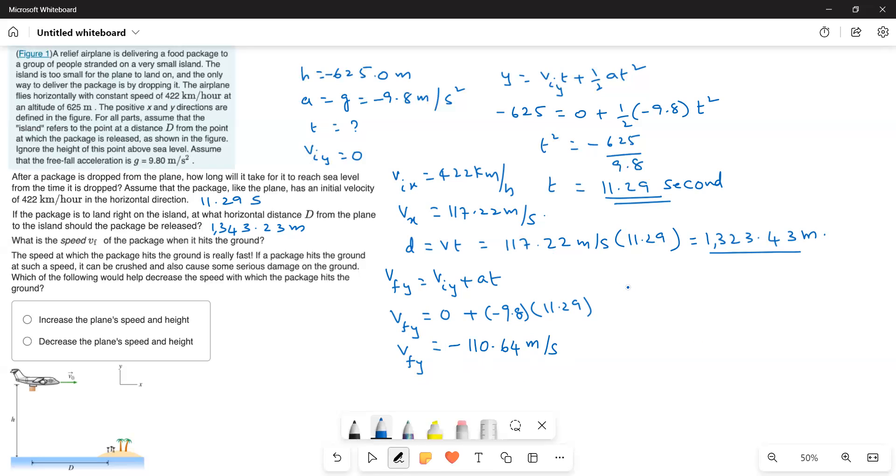Now, we have to find out v_f. v_f is equal to square root of v_x squared plus v_y squared. So, this is equal to square root of 117.22 squared plus negative 110.64 squared. So, this gives a value of v_f is equal to 161.18 meters per second.